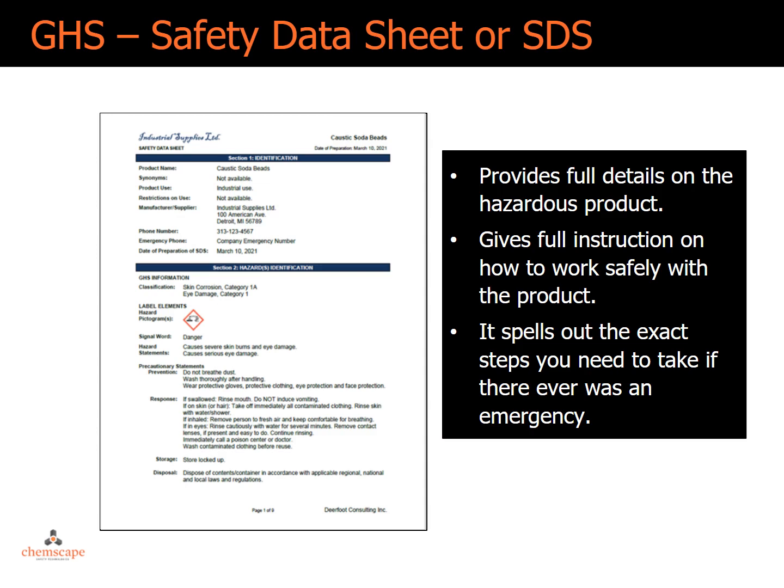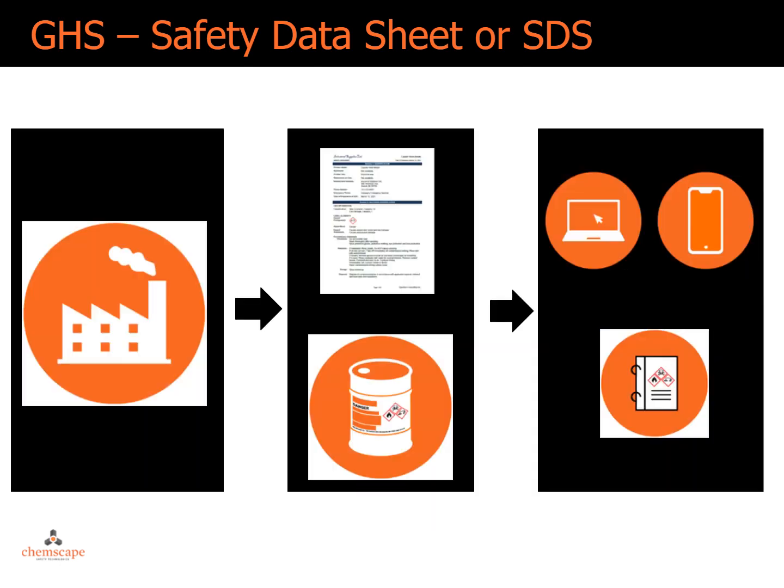The Safety Data Sheet, or SDS, provides full details on the hazardous product and full instructions on how to work safely with the product. It spells out the exact steps you need to take if there ever was an emergency. Safety Data Sheets are sent with shipments of the product and can be obtained through the supplier listed on the SDS or label. They can be stored electronically online with an SDS management product like SDS binders, or in a binder at your facility.